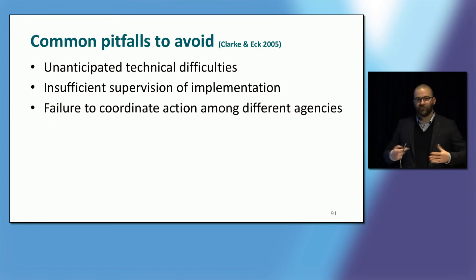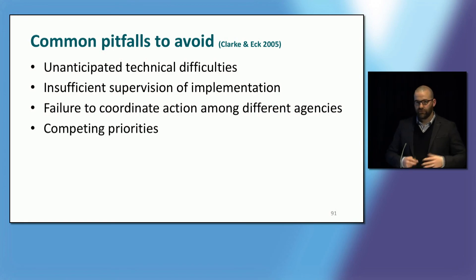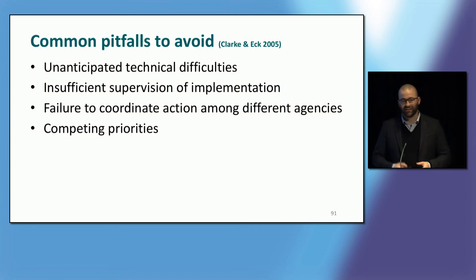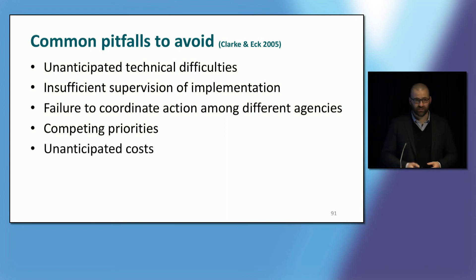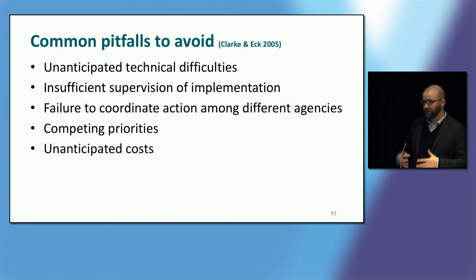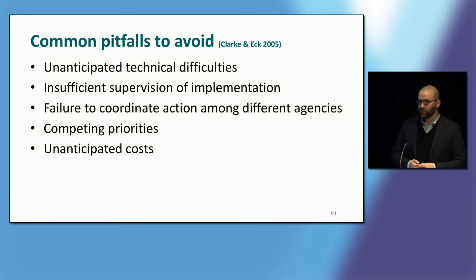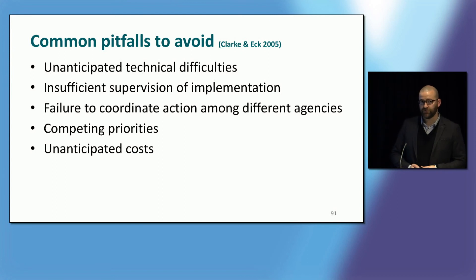Competing priorities — everyone has lots of things to do and is always really busy — so making sure that this project doesn't go off track because of other priorities that might conflict with your timeframes and resources. And unanticipated costs — something really common and really important to consider, particularly for things like CCTV, lighting, and design, which are expensive infrastructure. What are the potential unanticipated costs that you need to consider? Have you truly considered all of the costs associated with your project?